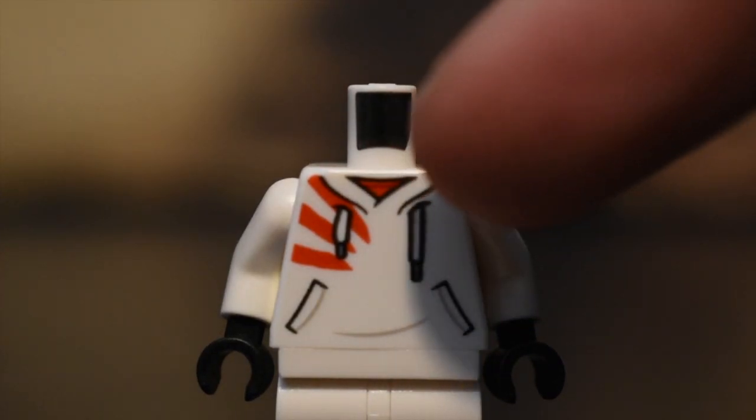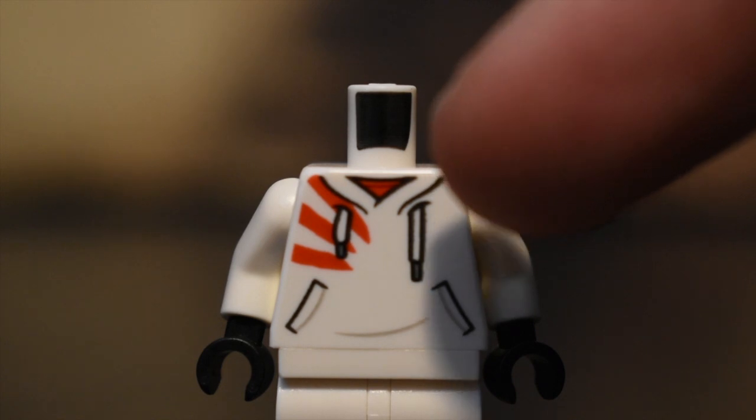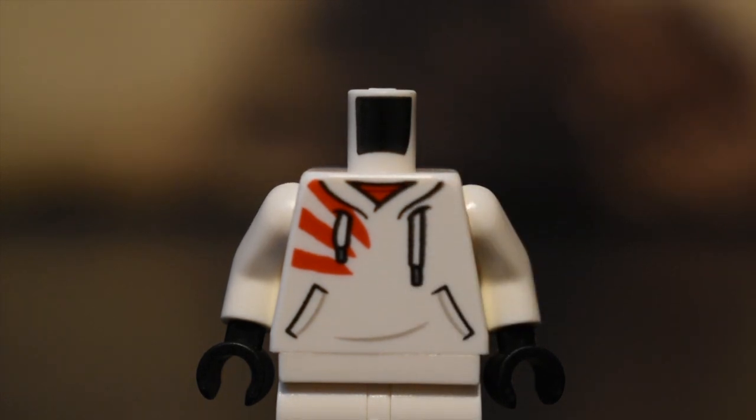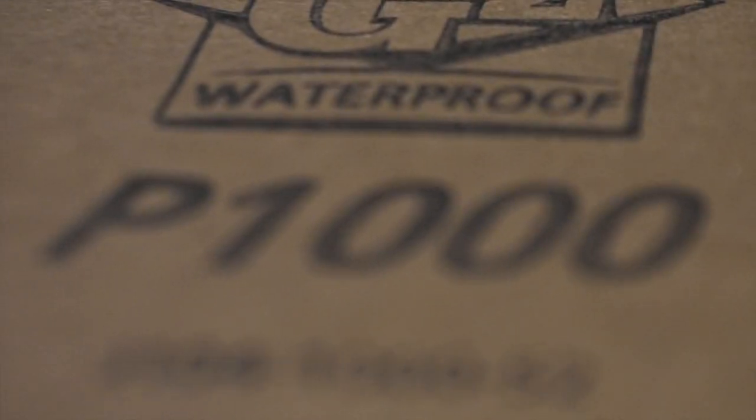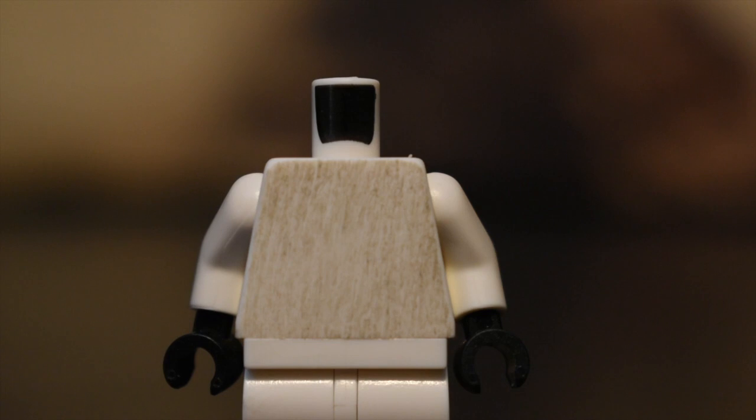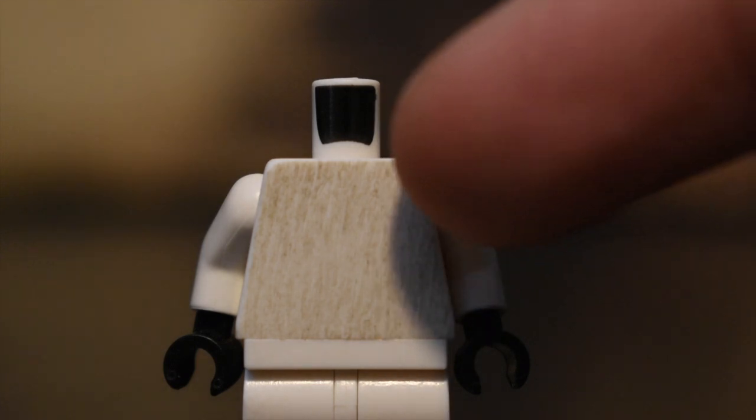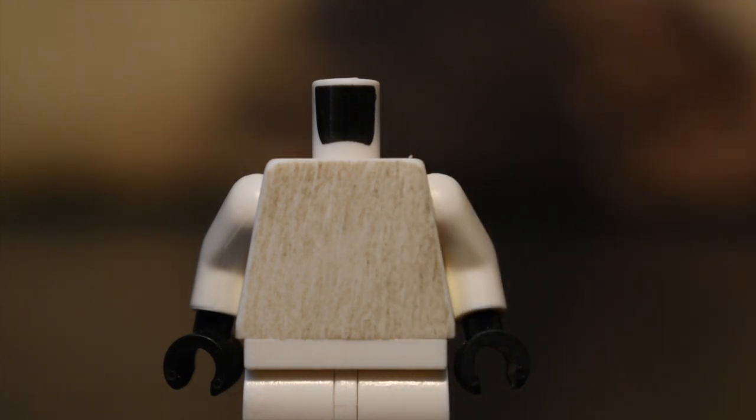So how are you going to remove this print so you have a white torso, you may ask? Well, all you need is some 1,000 grit sandpaper and only 1,000 grit. You don't want anything less than 1,000 grit. This is what's going to happen if you use sandpaper less than 1,000 grit. It's going to leave these giant gashes and dirt is going to be in there. And as you can see, it's just a mess.